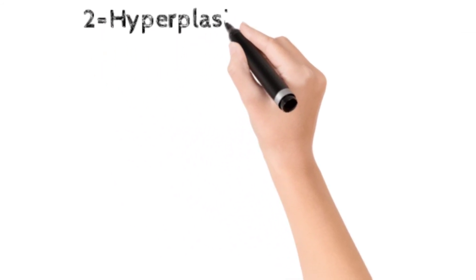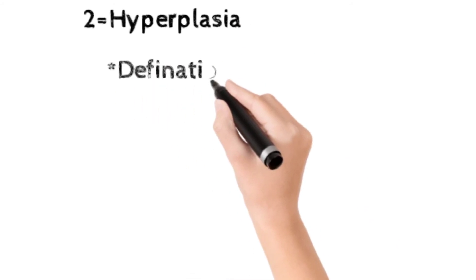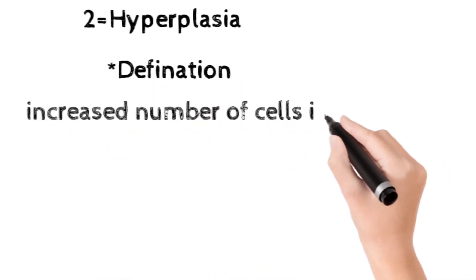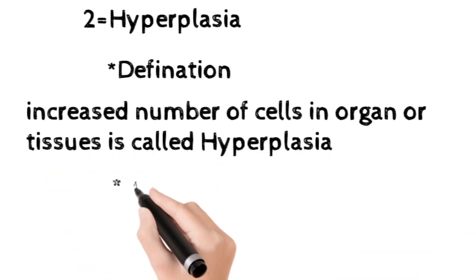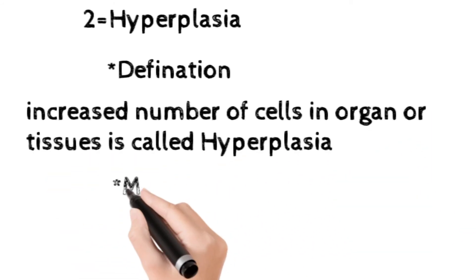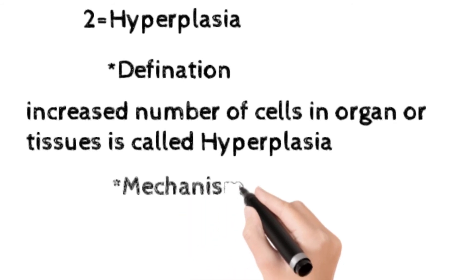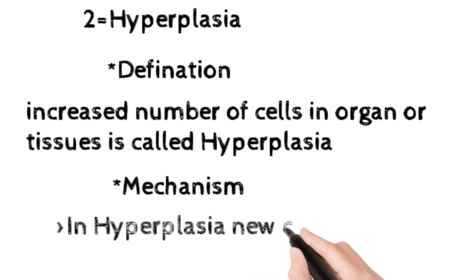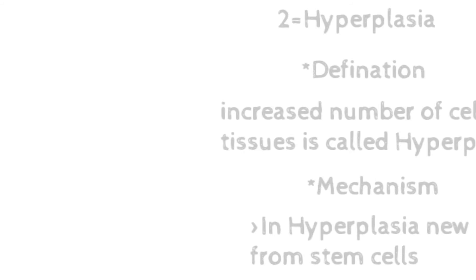After hypertrophy, come to hyperplasia. The definition: an increased number of cells in an organ or tissue is called hyperplasia. The mechanism of hyperplasia is that new cell formation occurs from stem cells.